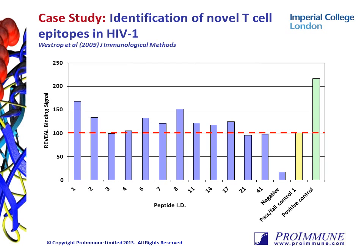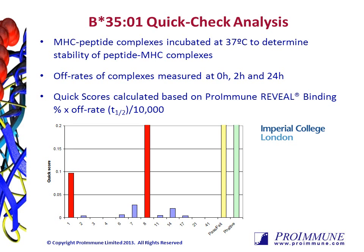In this slide, we present a case study in which 44 peptides from the HIV GAG protein were screened for MHC binding to B3501 using the Proimmune Reveal binding assay. Out of 44 peptides screened, 12 peptides were identified as HITs binding to B3501. On the right-hand side of the graph, we have plotted the B3501 positive control peptide shown in green. Following identification of these 12 HIT peptides, we analysed these sequences in the quick-check rate assay to determine the stability of these MHC class 1 restricted peptides.